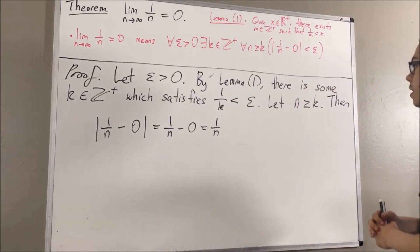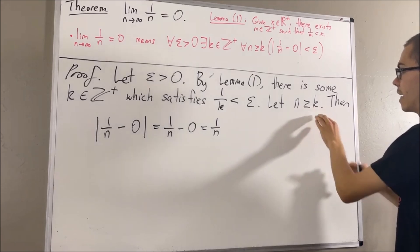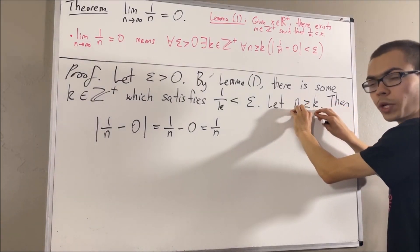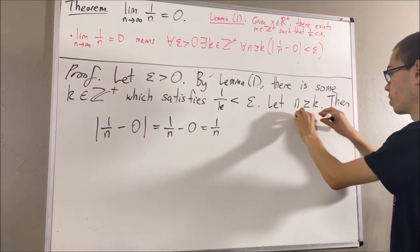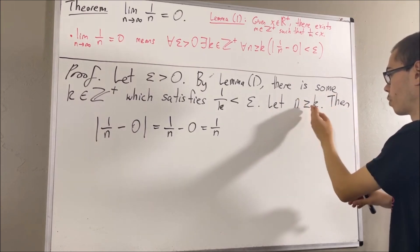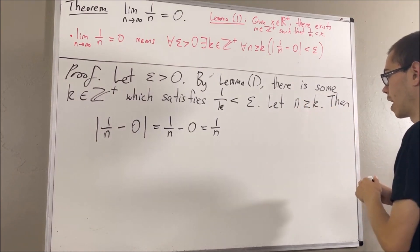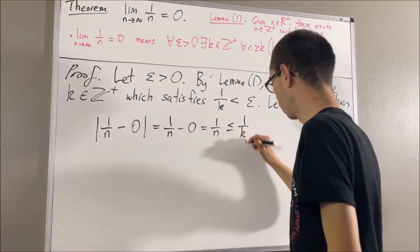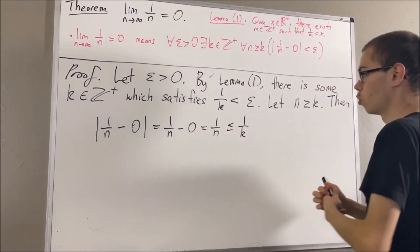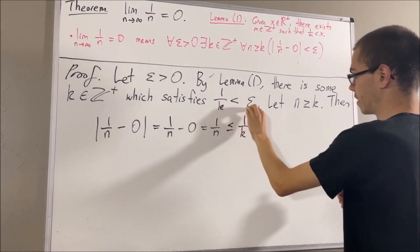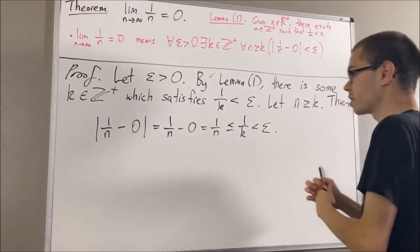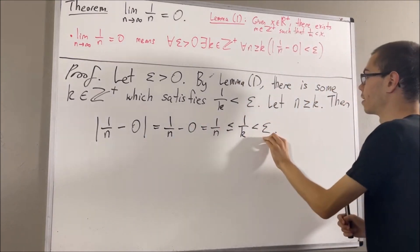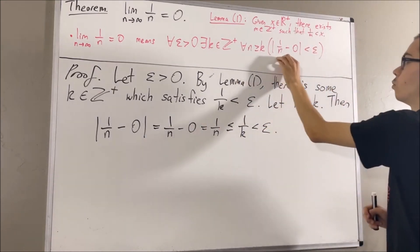But then, since n is greater than or equal to k, and n and k are both positive, we know that we're allowed to take the reciprocal of both sides, which will flip the inequality. And we get that 1 over n is less than or equal to 1 over k. However, we established that 1 over k is less than epsilon. So this tells us that 1 over n is less than epsilon — exactly what we wanted to show.